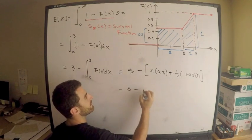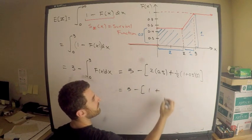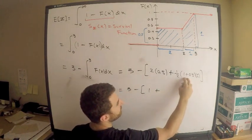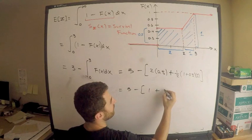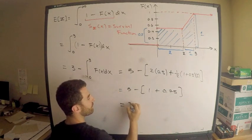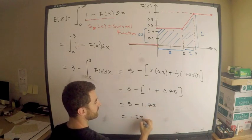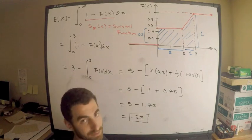This is 3 minus... 2 times a half is 1. So, 1 plus... This is 1.5 divided by 2, which is 0.75, which is equal to 3 minus 1.75, which is 1.25. That's my answer.